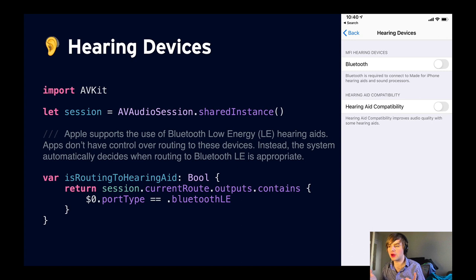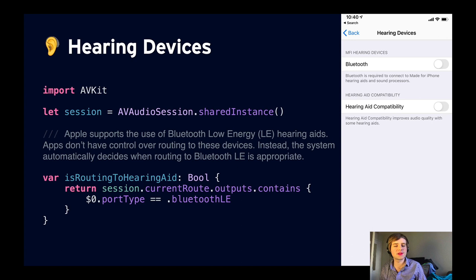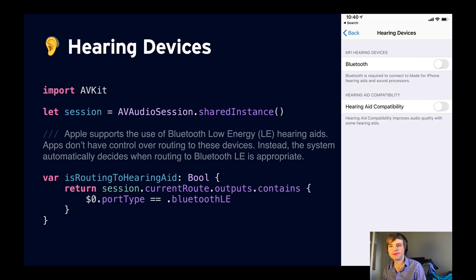For hearing devices — hearing aids — iOS will automatically route sound to a hearing aid if the user has configured it to do so in settings. But if for some reason your app needs to check if a hearing aid is connected and behave differently, you can do that. We import AVKit, grab the `AVAudioSession` shared instance, and I wrote a convenience property called `isRoutingToHearingAid` which checks the session's current route outputs to see if it contains a port type of Bluetooth LE — which is the profile used for hearing aids. So if we need to do anything different, we just check `isRoutingToHearingAid`.